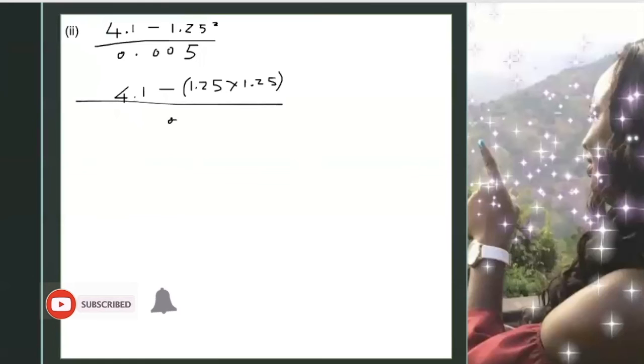All over, we have the 0.005. So we have 4.1 minus, so we have 1.25 multiplied by 1.25.